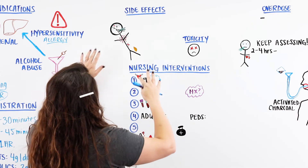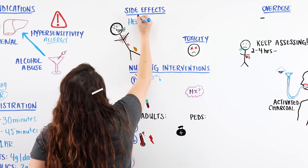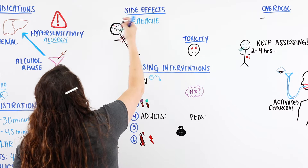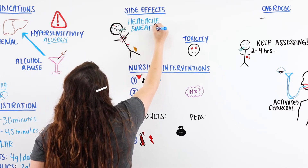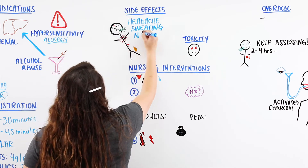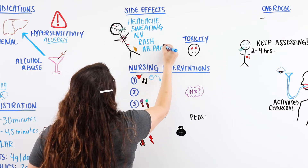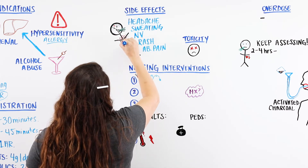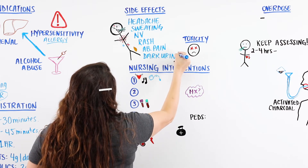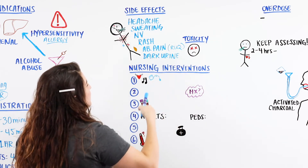Common side effects of Tylenol include headache — which is ironic since we sometimes give it for headaches — as well as sweating. These can also be early indicators of toxicity. Other side effects include nausea or vomiting, rash, and abdominal pain. The abdominal pain could be in the right upper quadrant, and dark urine is also a side effect to watch for.